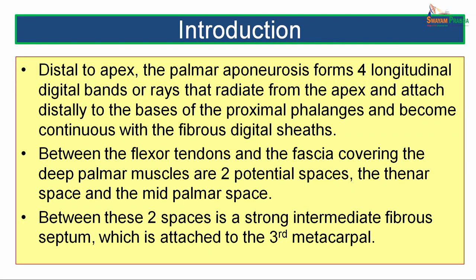Distally, the palmar aponeurosis forms four longitudinal digital bands or rails that radiate from the apex and attach distally to the bases of the proximal phalanges, becoming continuous with the fibrous digital sheaths. Between the flexor tendons and the fascia covering the deep palmar muscles are two potential spaces — the thenar space and the mid-palmar space — separated by a strong intermediate fibrous septum attached to the third metacarpal bone.